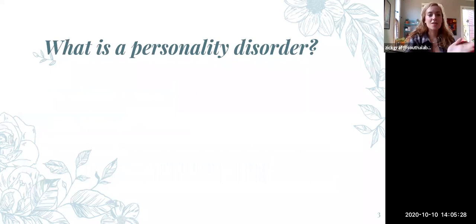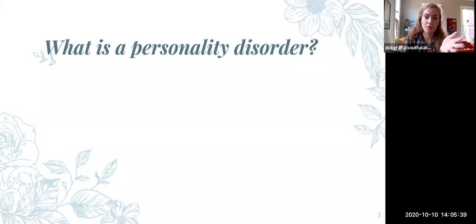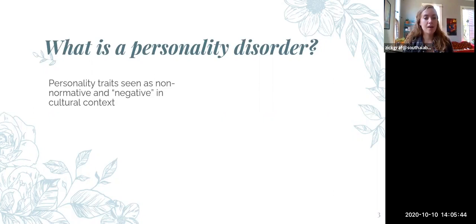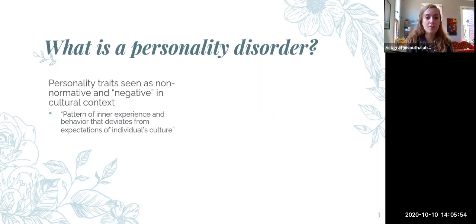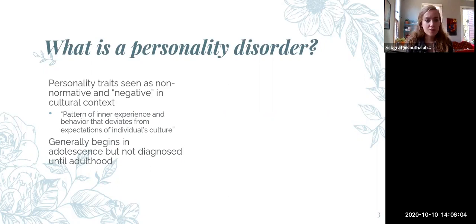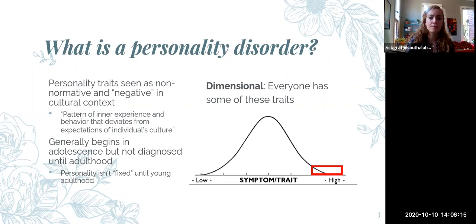So we're going to start out with what is a personality disorder. Those of you who were in class last Thursday can skip this section if you want. A personality disorder is basically someone with personality traits that are seen as maladaptive and/or seen as negative and bad in their cultural context. The technical definition is a pattern of inner experience and behavior that deviates from the expectations of an individual's culture — which is just another way of saying personality. Personality disorders generally begin in childhood or adolescence, but they can't be diagnosed until adulthood, because personality traits aren't stable until someone has reached at least young adulthood.